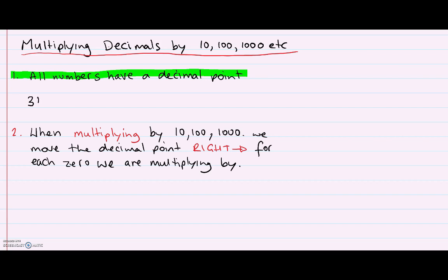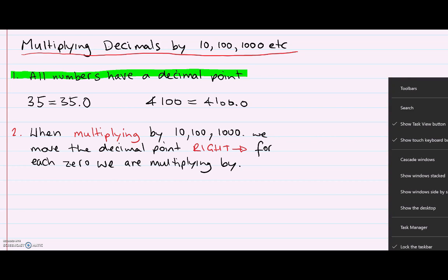So a number like 35 can be written as 35.0. That decimal point is straight after the units column. Or a number like 4100 can be written as 4100.0. And that's because this decimal point, even though we may not write it, is always technically after the units column. That's very important.